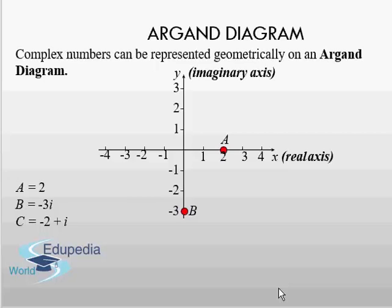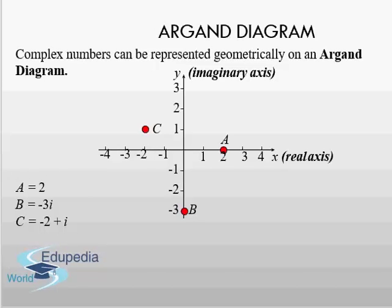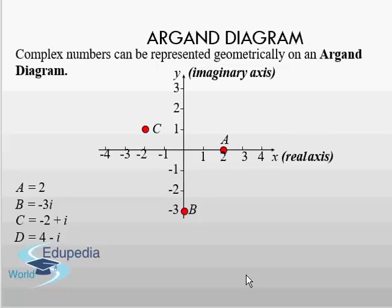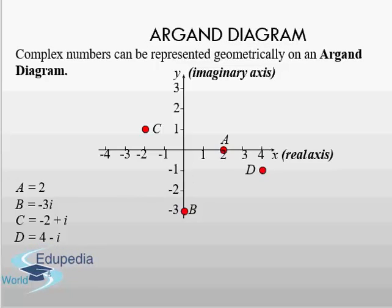Moving on, we have point C, which has both a real number and an imaginary number, so it will be plotted using both the real axis and the imaginary axis. The real value is negative two, and it also has i, which is actually 1i. So where would you plot this? I think it's going to be somewhere at negative two plus i — that is negative two on the real axis and one i on the imaginary axis. And that is exactly where it is plotted: negative two plus i. Next, D is four minus i. Four is the real number and negative i is the imaginary part. On the real axis that gives us four, and negative i means below the origin on the imaginary axis — so point D is plotted at four minus i.